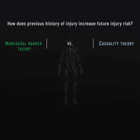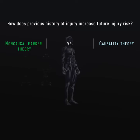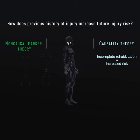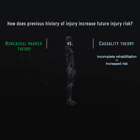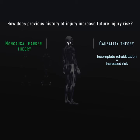When it comes to a previous history of injury, researchers have put forward two theories to explain why this increases subsequent injury risk. The first is known as the causality theory, in which incomplete or inadequate rehabilitation leads to increased risk for the previously injured tissue because of incomplete healing and weakness, altered movement patterns, loss of balance, or other functional or psychological impairments.